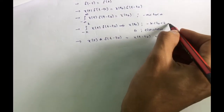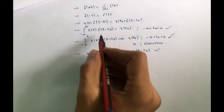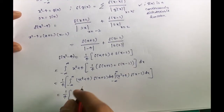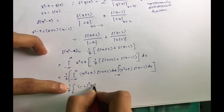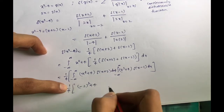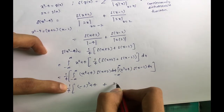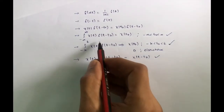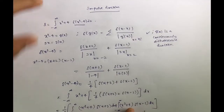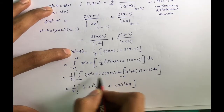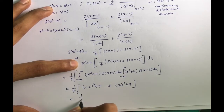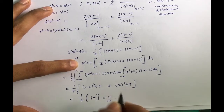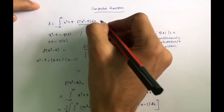Using the sifting property — x(t) · δ(t - t₀) integrates to x(t₀) — we evaluate: for δ(x + 2), we get (-2)² + 4 = 4 + 4 = 8; for δ(x - 2), we get (2)² + 4 = 4 + 4 = 8. So the result is (1/4)(8 + 8) = (1/4)(16) = 4. The answer is 4.